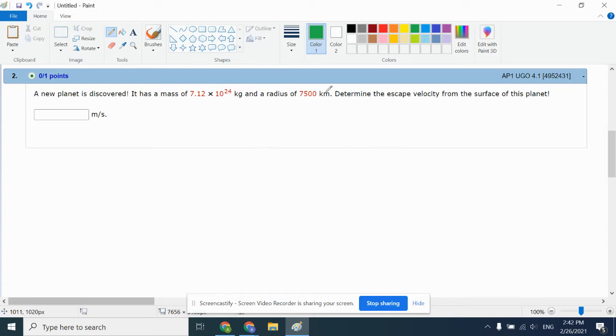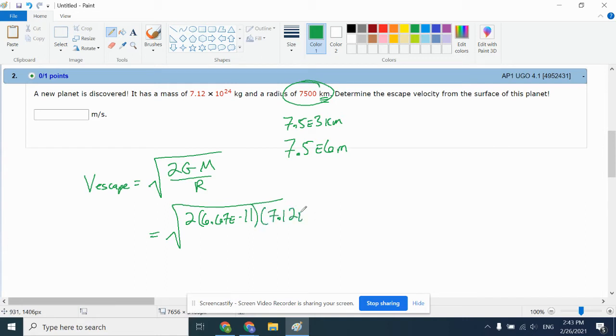A new planet is discovered with a given mass and radius. First thing, draw your attention, this is kilometers, so that's 7.5E3 kilometers, so we're going to do 7.5E6 meters. The escape velocity equation was derived last class. You can reference the notes if you need to, but it is the square root of 2GM over R. We'll run 2 times 6.67E-11 times the mass of the planet which is 7.12E24, dividing it by 7.5E6. And all of that is under a square root. And I successfully got 11,253 meters per second.